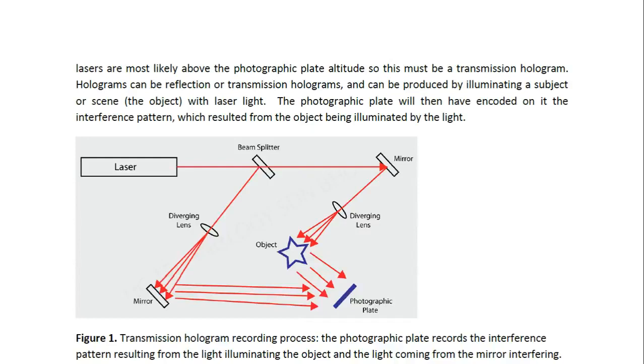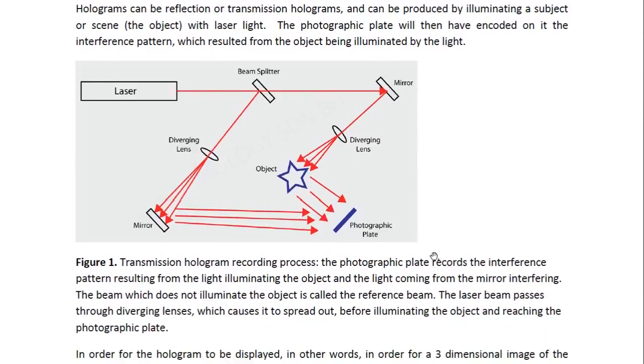Holograms can be reflection or transmission holograms and can be produced by illuminating a subject or scene which here we call the object with laser light. The photographic plate will then have encoded on it the interference pattern which resulted from the object being illuminated by the light.